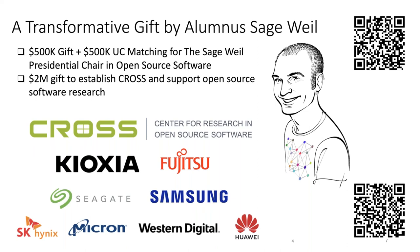Sage gave us basically two and a half million dollars, plus $500,000 matched from the UC system, to create a presidential chair in open source software, currently carried by Scott Brandt, and $2 million to establish CROSS. Sage said he would give money if we would create a structure in the university that would enable other students to have a similar career as he did. I had just created a class that would teach students how to engage in open source communities and the Linux community — that was the perfect lead-in to CROSS. It was clear we needed something like that in the university.